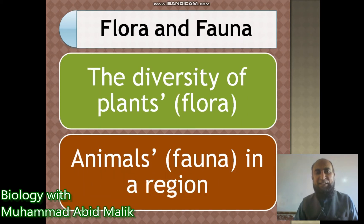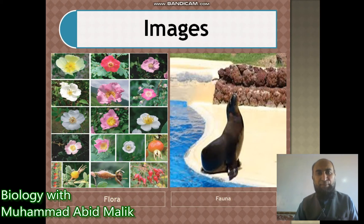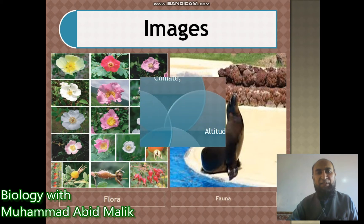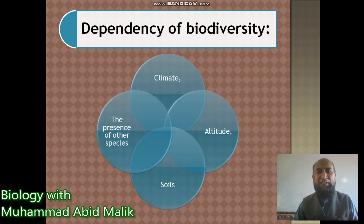Next, we try to understand flora and fauna, which together make up biodiversity. The diversity of plants in a region is termed flora, and the diversity of animals in a region is termed fauna. The image of flowers and plants shows flora, and the image of animals shows fauna, so we can easily distinguish between the two from this picture.